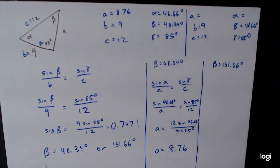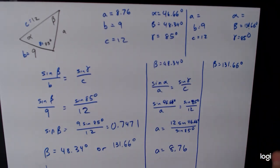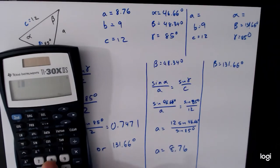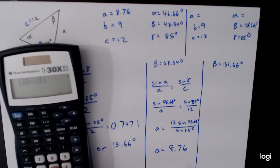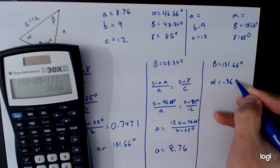Now if we do this other case, we go through the exact same process. The arithmetic itself is not any different and we have to just see what happens. So we do 180 minus 85 minus 131.66 and we get, let's see, alpha is negative 36.66 degrees.